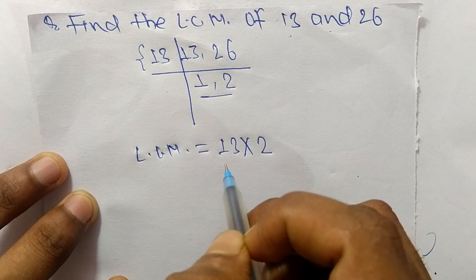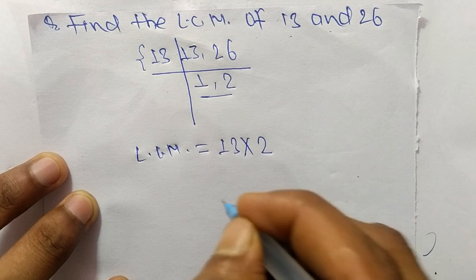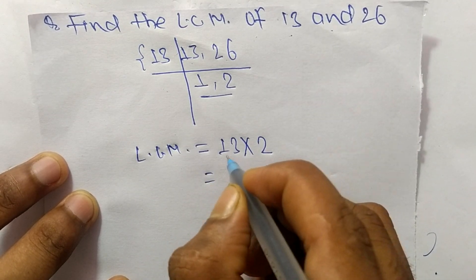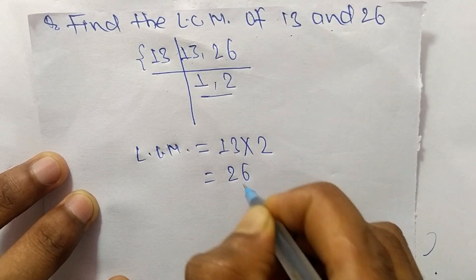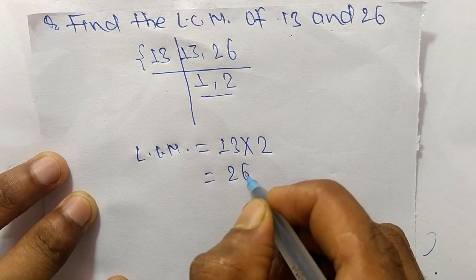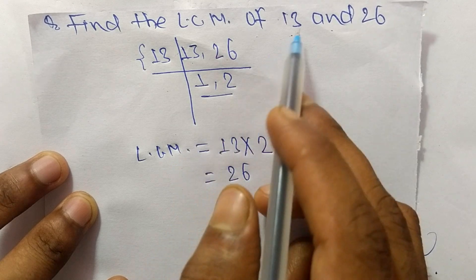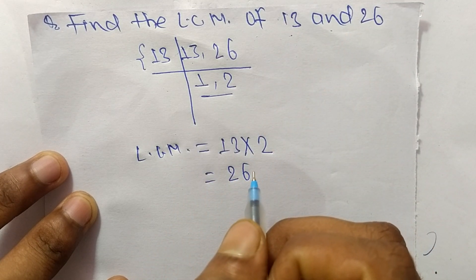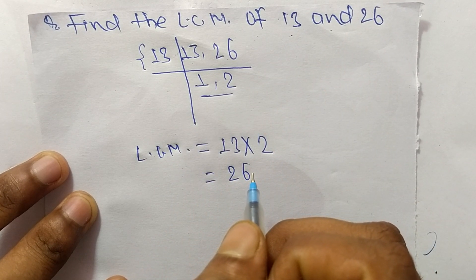So it is 13 times 2, which means 26. Therefore, 26 is the LCM of 13 and 26. That's all for today, thanks for watching.